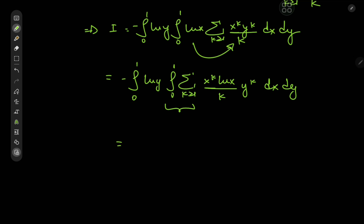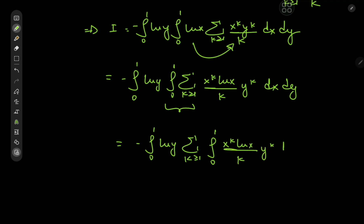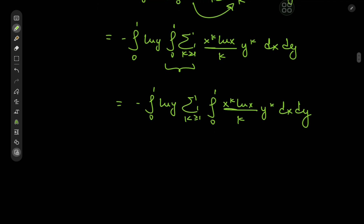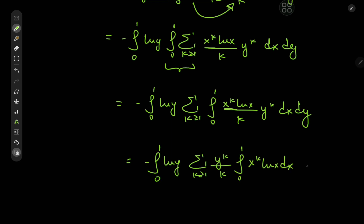We can now switch up the order of the integration and summation operators to get: negative integral from 0 to 1 of log y times the sum over k of the integral from 0 to 1 of x^k times log x divided by k times y^k dx dy. The 1/k term is independent of x, so we can take it outside the integration operator, giving us negative integral from 0 to 1 of log y times the sum over k of y^k over k times the integral from 0 to 1 of x^k times log x dx dy.